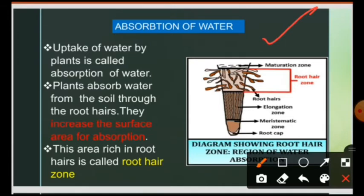Plants need water for all their growth and development. Water is important for photosynthesis — when we studied photosynthesis, we saw that water is a very important raw material. Plants need carbon dioxide and plants need water. Water also helps in plant growth, which is controlled by water. All metabolic reactions run in an aqueous medium. Even stomata opening and closing is controlled by the movement of water.